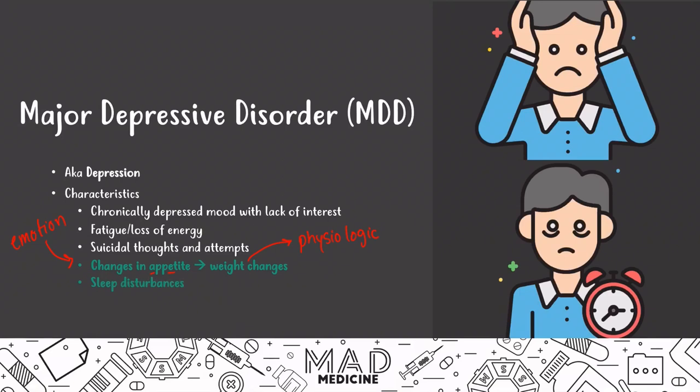Patients also end up having sleep disturbances — that's very common — and they also end up having psychomotor agitation and/or retardation. These things are very important because they exacerbate the disease from being just an emotional disorder into a more physiologic one. They're not sleeping properly, or they're sleeping too much, and they may have psychomotor agitation and/or retardation.